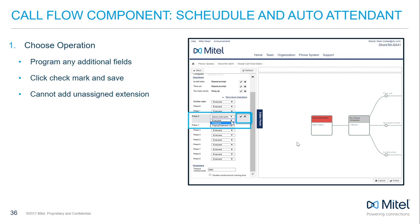For dial by first or last name, the names and extensions included in the list are determined one of two ways. Separate extension lists can be created and associated with this option on the auto attendant. Otherwise, if no extension list is chosen, the extensions that include the checkbox 'include in system dial by name directory' will be used from the phone settings.